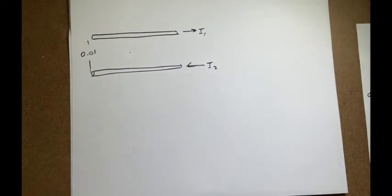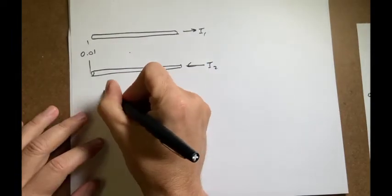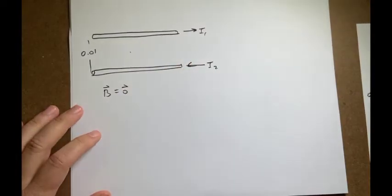where is the magnetic field equal to zero? The zero vector. Where would that be?